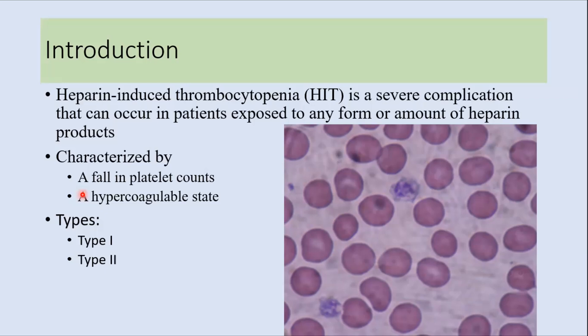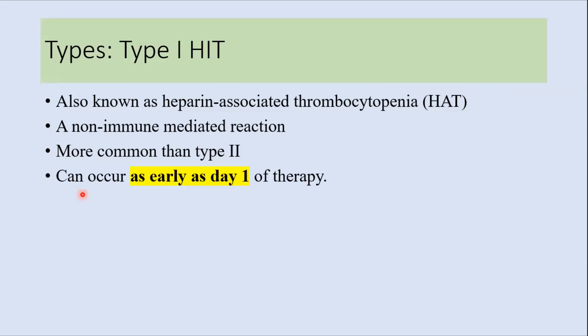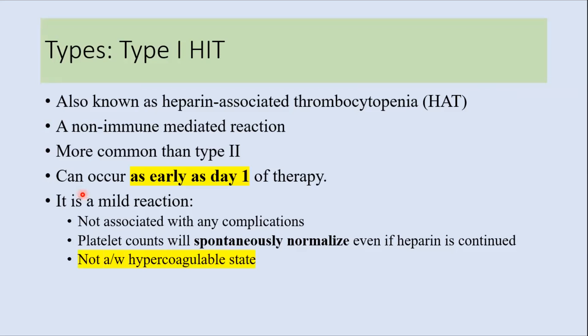Type 1 is more common, but type 2 is more clinically significant, so in this presentation we'll be focusing more on type 2 HIT. Type 1 HIT is a non-immune mediated reaction, more common than type 2, and can occur as early as day 1 of heparin therapy. It is a mild reaction, not associated with any complications, and platelet counts will spontaneously normalize even if heparin is continued. Importantly, it is not associated with any hypercoagulability, unlike type 2 HIT.